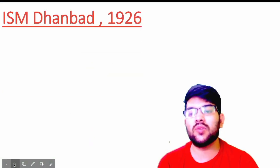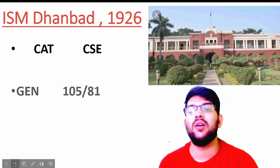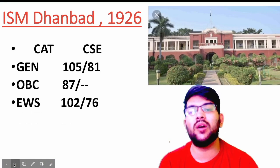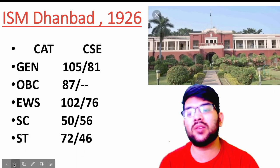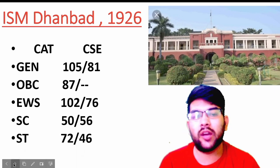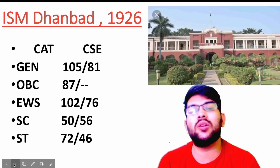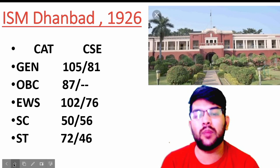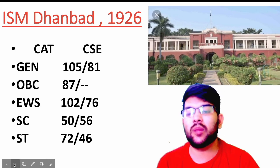Now for the next IIT, established in 1926: for general, 105 and 81 marks; OBC, 87 marks; EWS, 102 and 76 marks; for SC, 50 and 56 marks; and for ST it is 72 and 46 marks. Once again I would like to inform you: cutoff depends on the reservation type of a particular branch and also the demand for that branch. If more students apply for a particular branch, the cutoff will go higher — you have to score more marks.